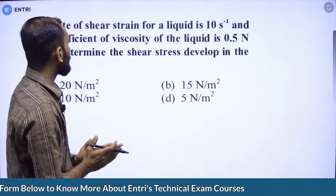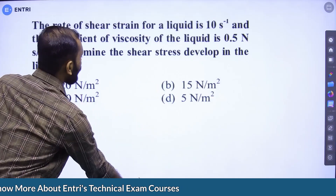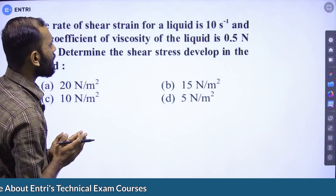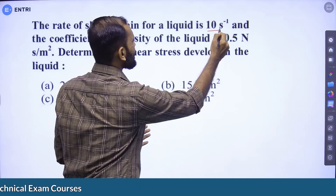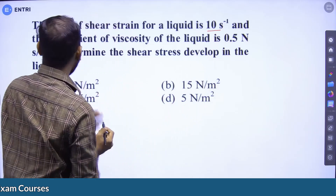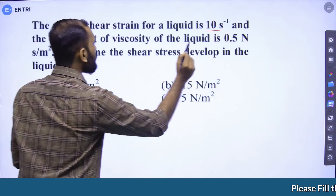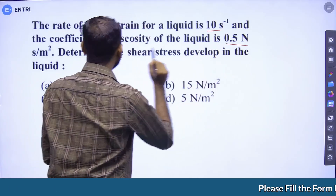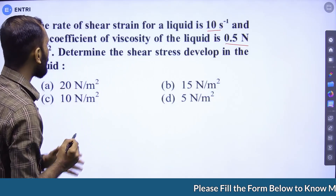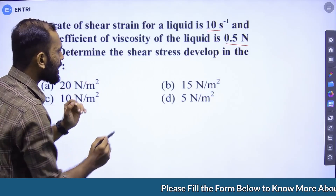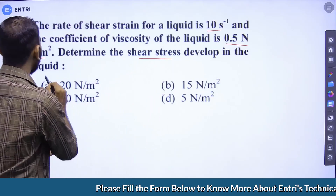Question number one: The rate of shear strain for a liquid is 10 per second and the coefficient of viscosity of the liquid is 0.5 Newton second per meter square. Determine the shear stress developed in the liquid.